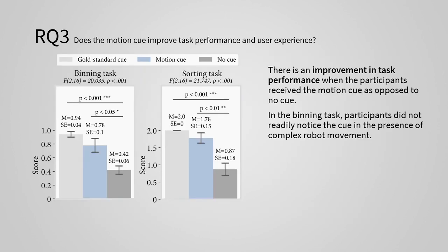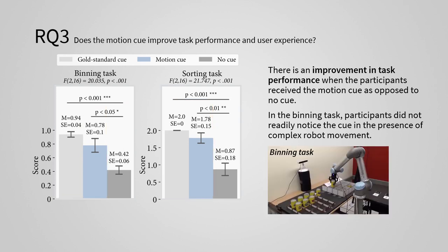We aggregate the scores for each task and find that in terms of task performance, participants perform better when they receive the motion cue as opposed to no cue. Task performance in the presence of the motion cue is comparable to the performance in the presence of the gold standard cue. However, in the binning task, despite this good performance, participants complained that they did not readily notice the cue in the presence of complex robot movement.